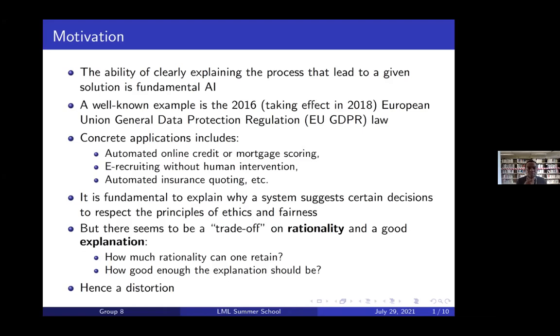Some examples include automated online credit and mortgage scoring, e-recruiting without human intervention, and automated insurance coding. It is fundamental to explain why a system suggests certain decisions because we have to respect the principles of ethics and fairness.